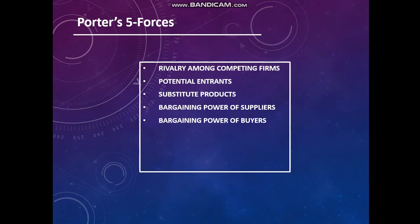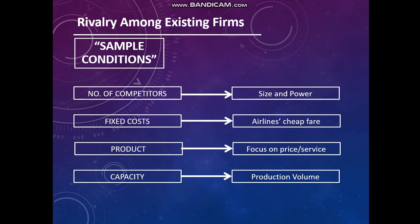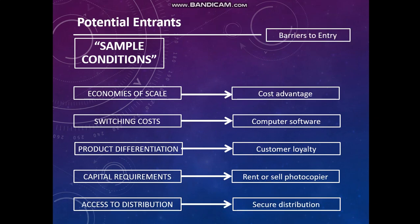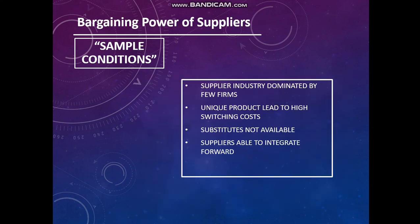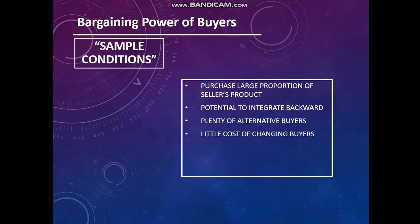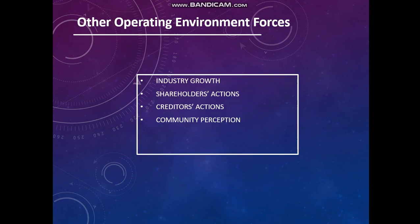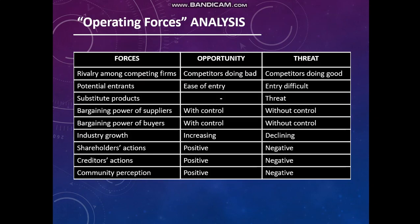The competitive environment covers Porter's Five Forces: rivalry among existing firms, potential entrants and entry barriers, substitute products, bargaining power of suppliers, and bargaining power of buyers. This is followed by the operations environment forces.